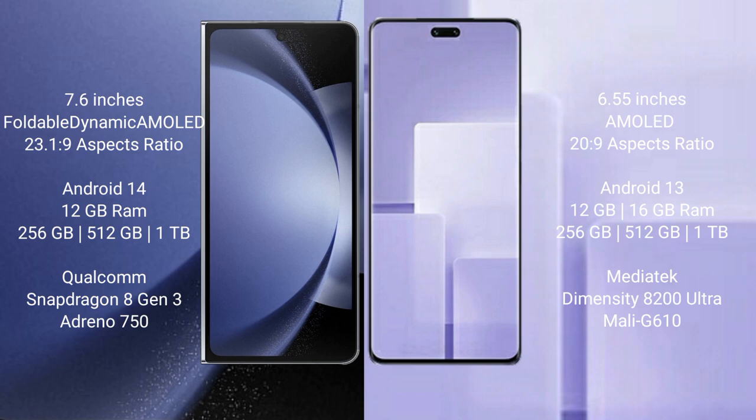Samsung Galaxy Z Fold 6 comes with 12GB RAM and 256GB or 512GB internal storage, powered by the Qualcomm Snapdragon 8 Gen 3 processor and Adreno GPU. Xiaomi CB3 comes with 12GB or 16GB RAM and 256GB, 512GB, or 1TB internal storage, powered by the MediaTek Dimensity 8200 Ultra processor and Mali-G610 GPU.